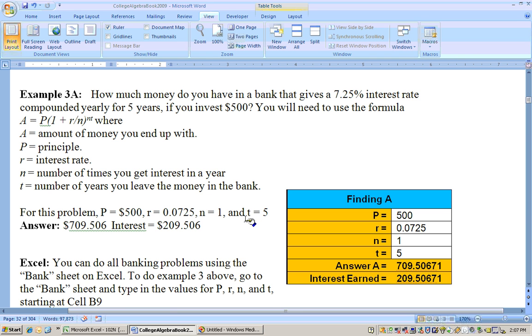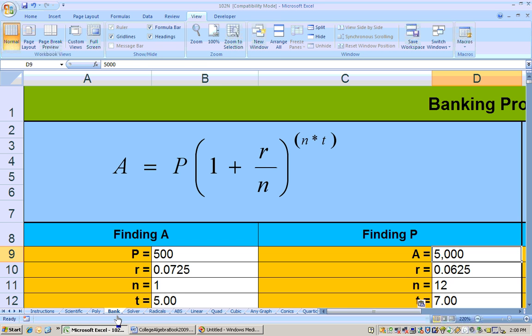Now, you could just do this on a calculator if you wanted to and just take – if you had a graphing calculator, it would be 500 parentheses 1 plus 0.0725 divided by 1, which is 0.0725, raised to the 1 times 5, which is 5. So it's just a matter of multiplying some numbers together. Now, you can do all these type of banking problems on the Excel sheet called Bank, and that's what I'm on.